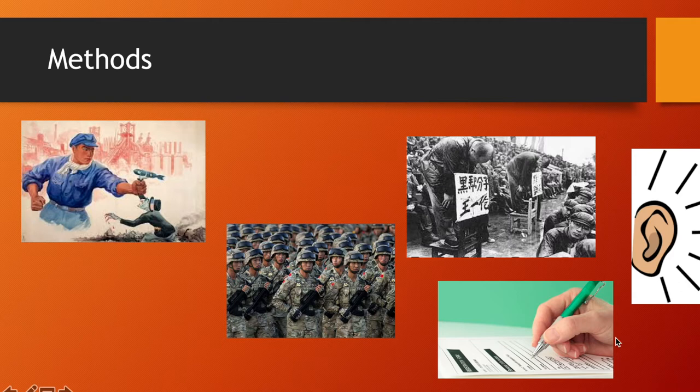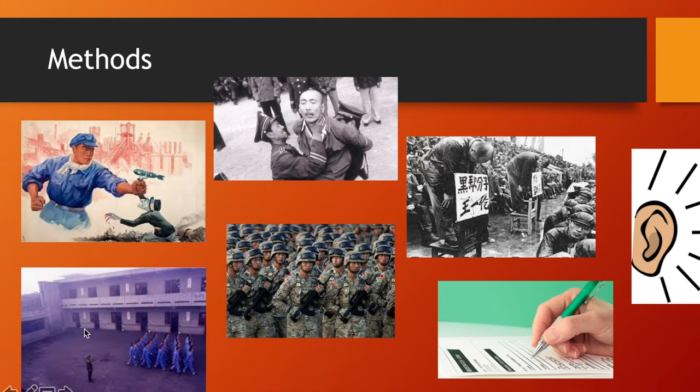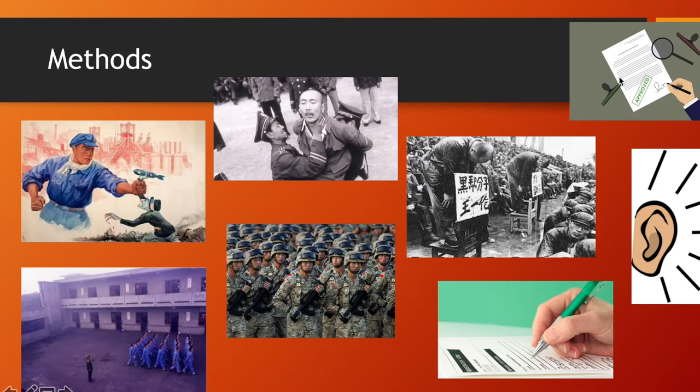Struggle meetings were basically sham trials where capitalists were tortured, and if they were lucky they were executed — if unlucky, they were sent to the appalling conditions of the Laogai system. Torture was very common, and the Laogai system itself consisted of labour camps. The Communist Party also used legislation in order to consolidate its control.